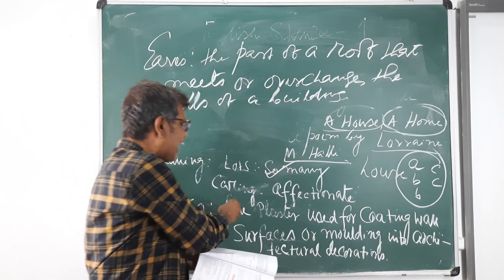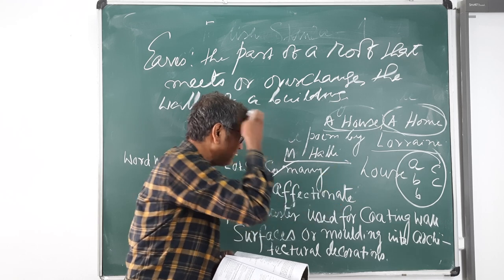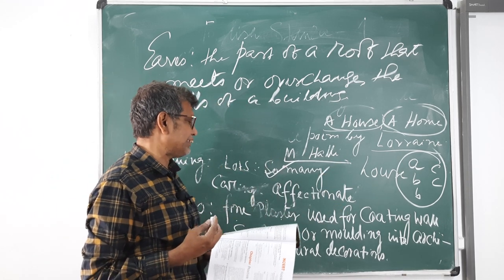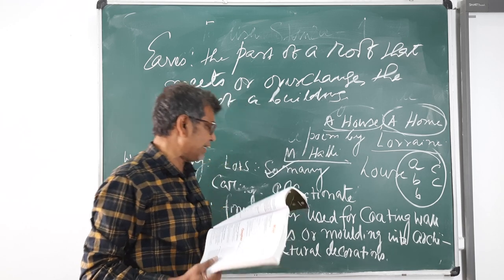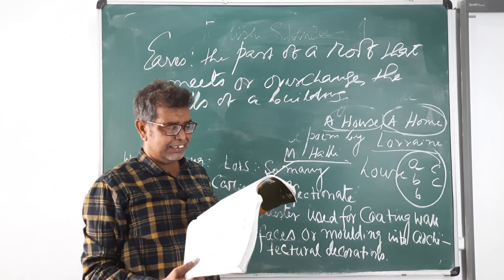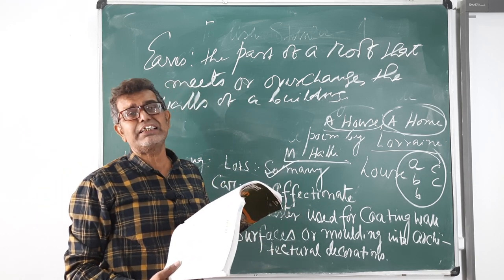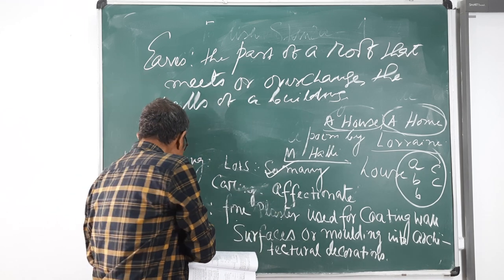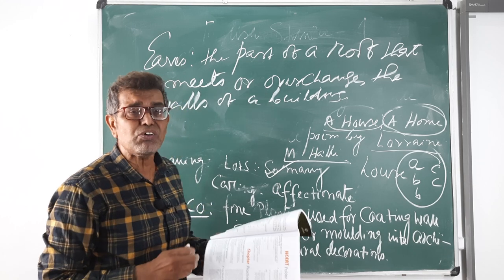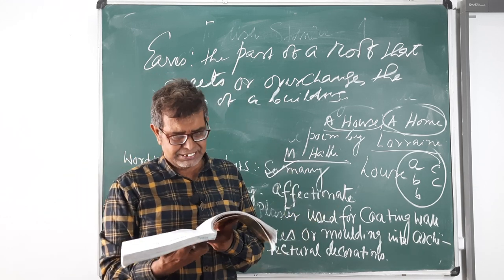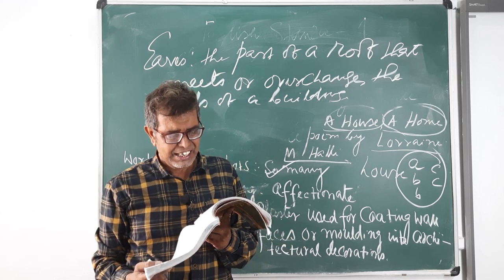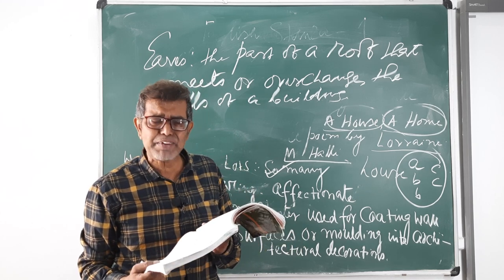Stucco means fine plaster used for coating wall surfaces or molding into architectural decorations. In this first stanza, if some words are difficult, I have pointed out one that will be definitely stucco. Otherwise other words are very very easy to understand. And kindly means in a kind manner.